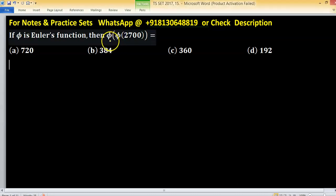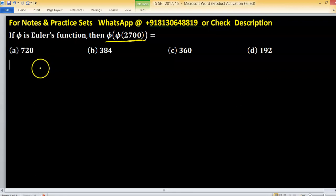In this given problem, phi is Euler-phi function and we have to find this underlying value. So how to apply Euler-phi function?